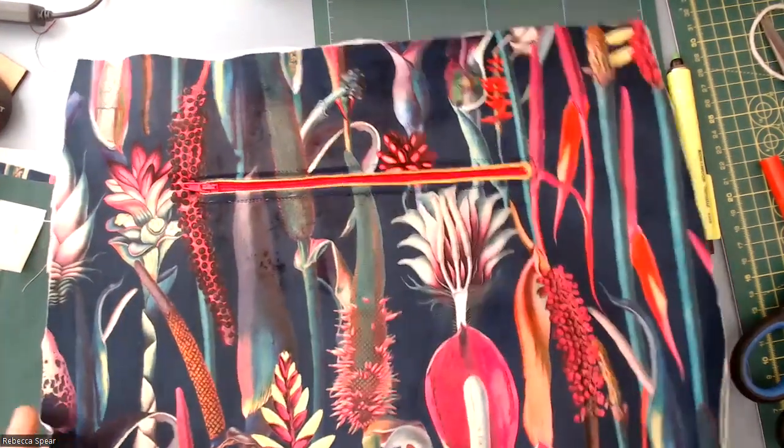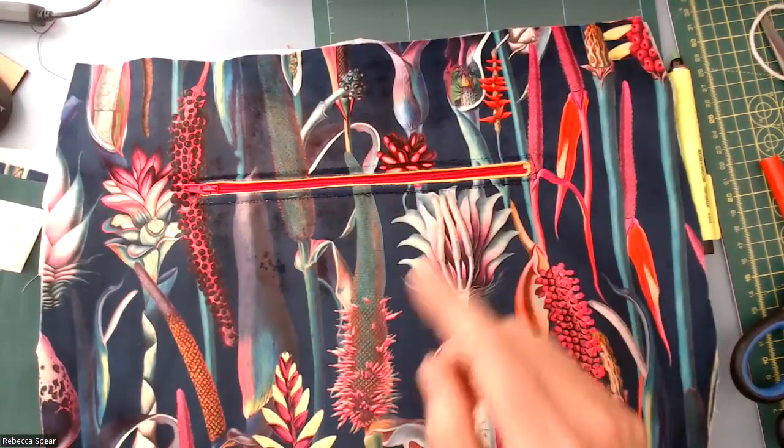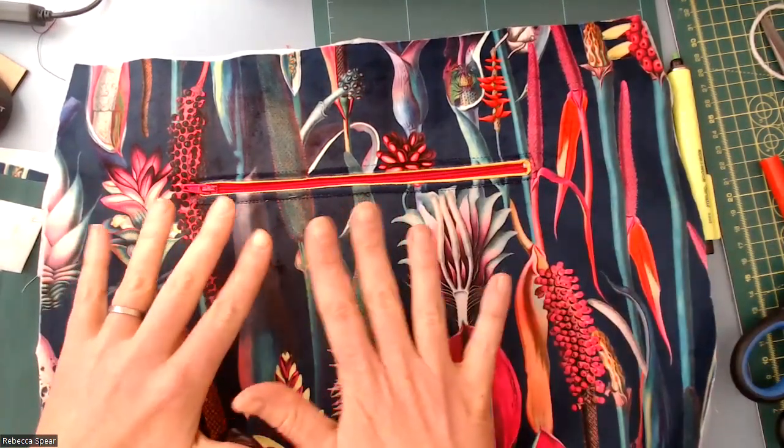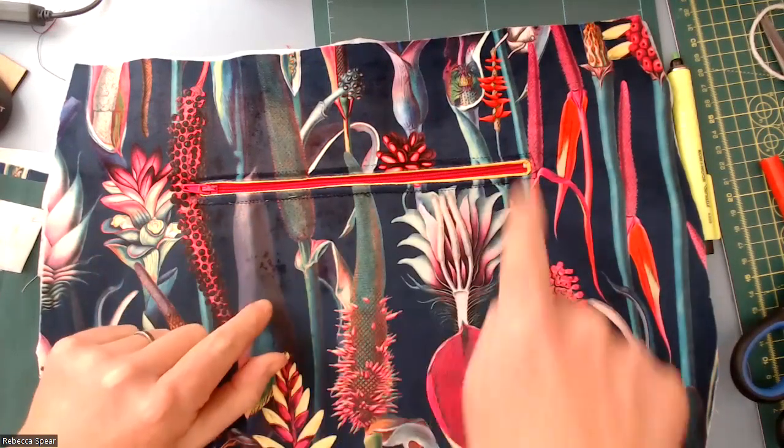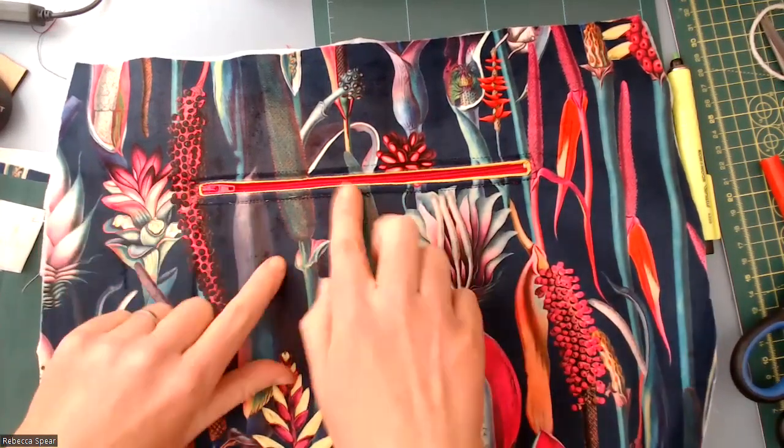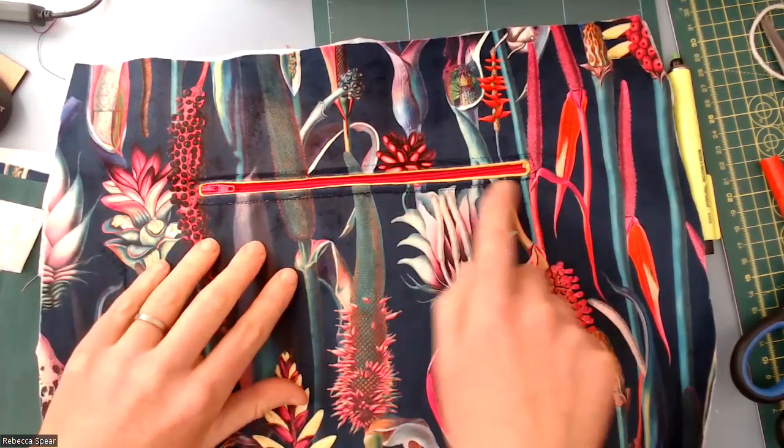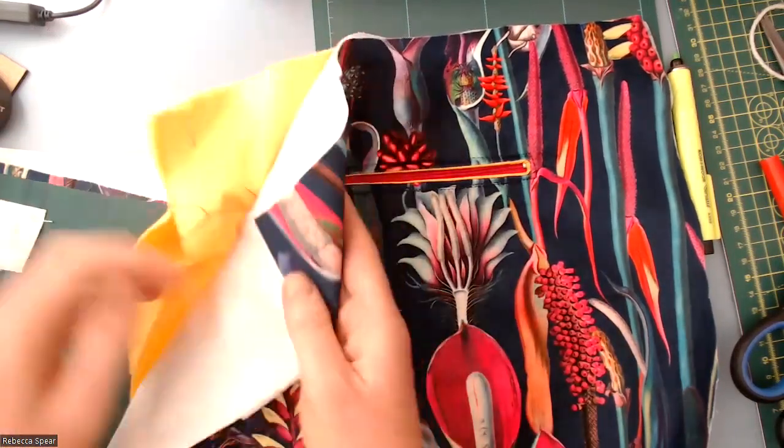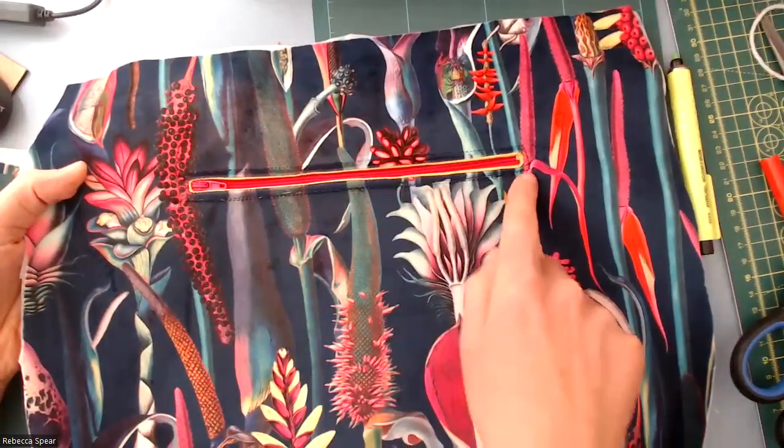So where we got to last time was the slash zip pocket. We'd sewn the front of the pocket, sewn around the rectangle, pushed it through, and placed our zip behind. What I've done here with the zip foot is sew all the way around that rectangle to hold that in place.